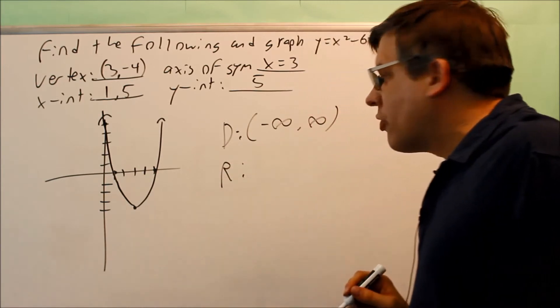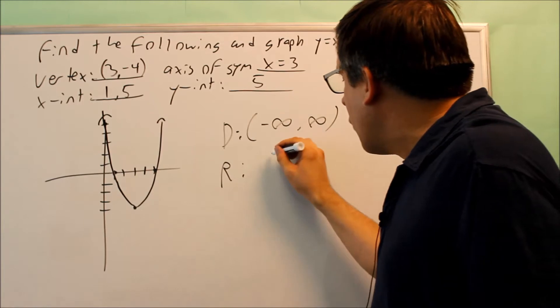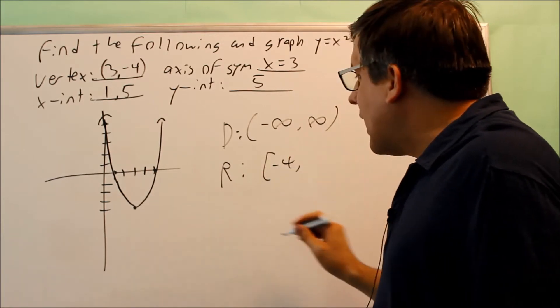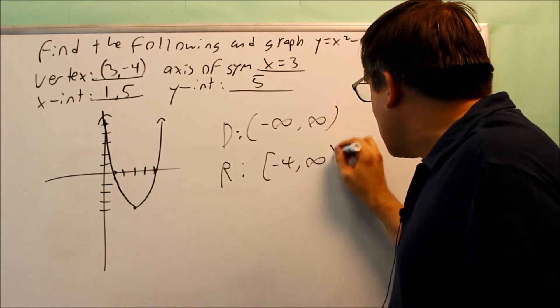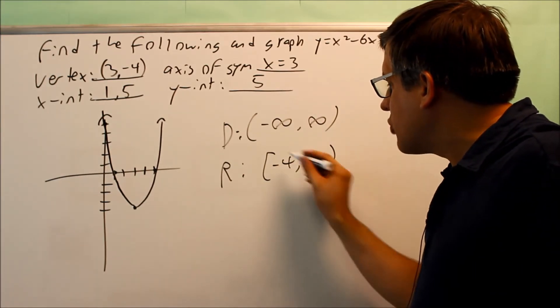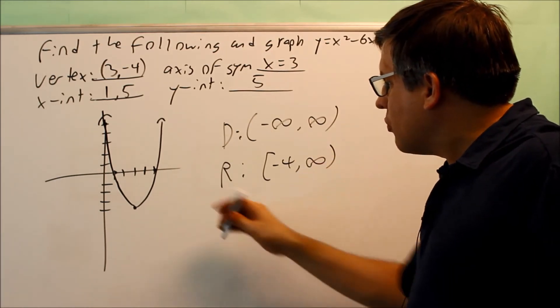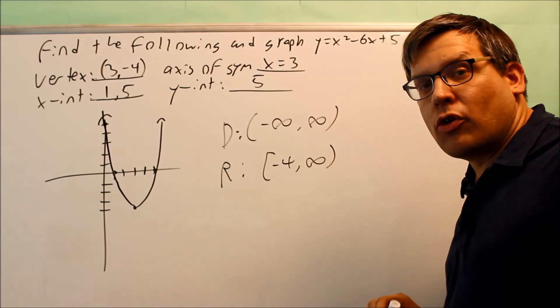Okay, let's do the range next. So for range, the lowest number here is going to be negative 4. The highest number it will go up to is going to be infinity. So in this case, the lowest number is negative 4, highest is infinity. You always put the lowest number first, then the highest number. So the range would be these y-values only starting from negative 4.